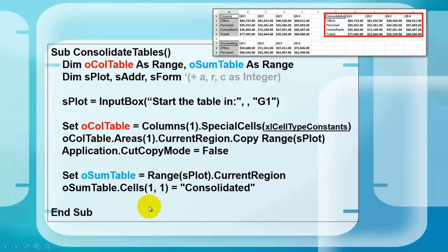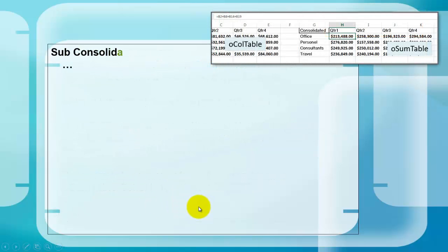We put in the first cell of that O sum table range, which is the word consolidated. And we continue our subroutine. We find out the sum table to the right, how many columns it has at this moment. Five. We store that in C.